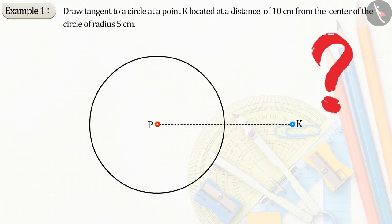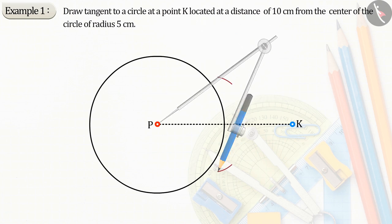Can you tell what step should we take next? Now, we will bisect the line segment PK from which we get the midpoint M of the line segment PK.